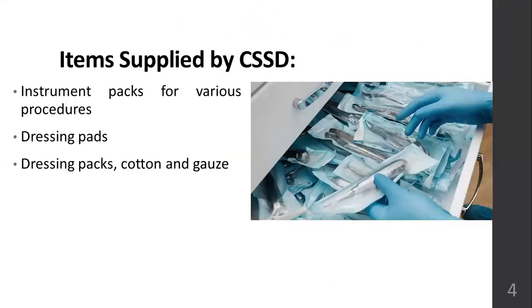Items usually supplied by CSSD include instrument packs for various procedures in a complete kit, complete surgical kits in packed form, dressing pads, dressing packs, and cotton gauzes which are also sterilized and then used within the hospital. These come in cloth packages, linen packages, or paper packages.